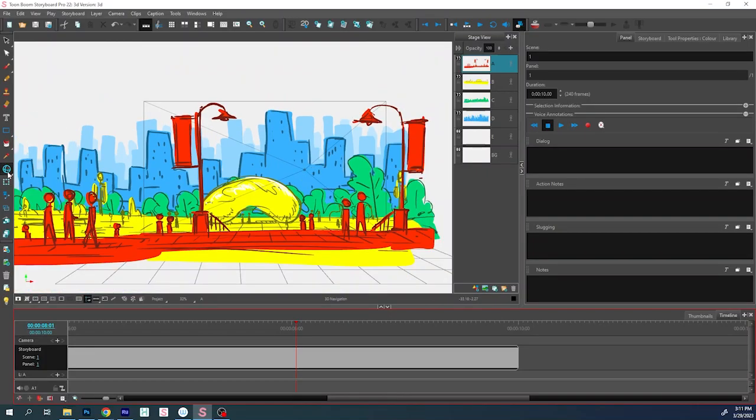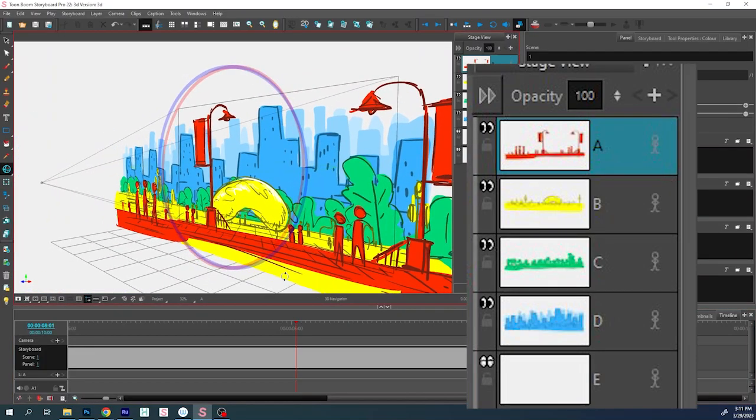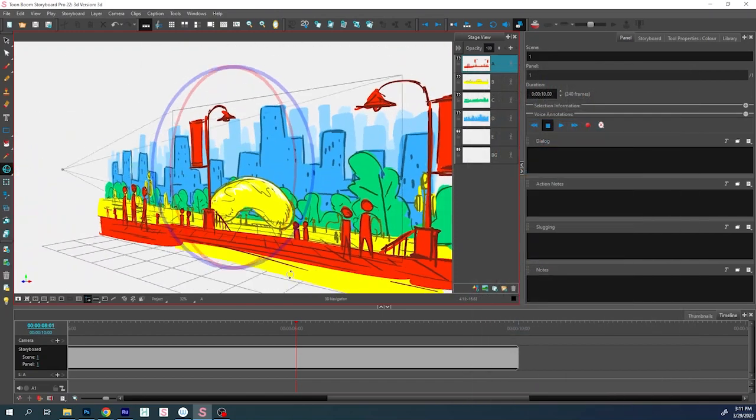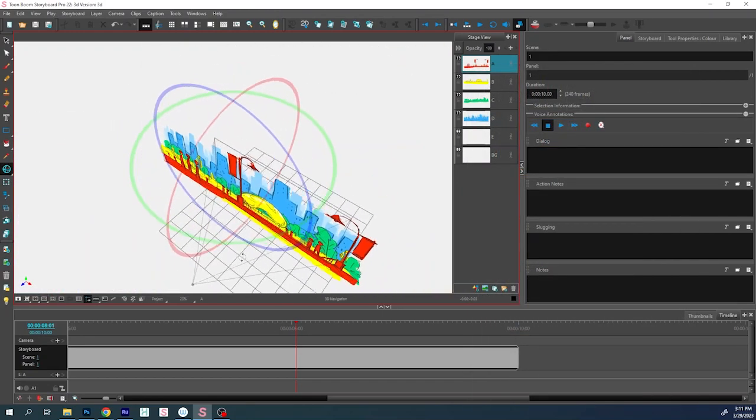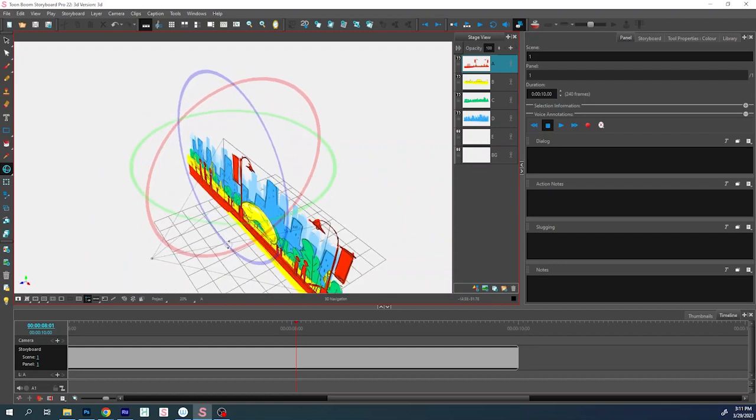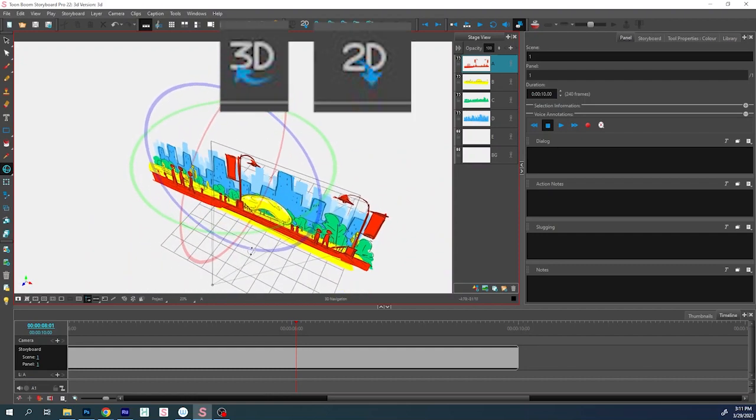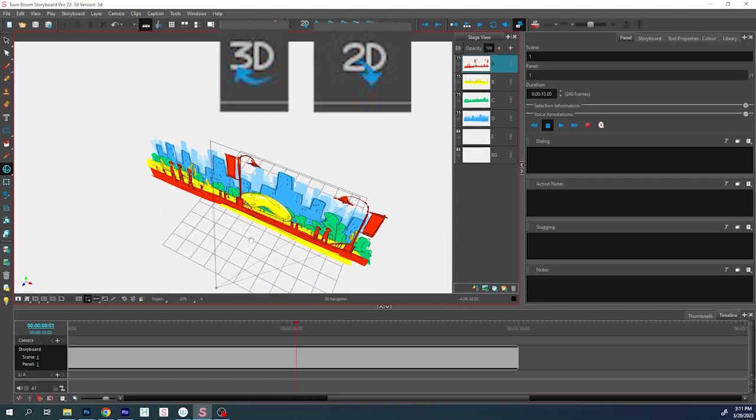The digital set will get built on multiple layers in Storyboard Pro. Using the 3D navigation button, you can move around and rotate the set. Don't forget to change from the 2D to the 3D layout so that way you can actually do this.